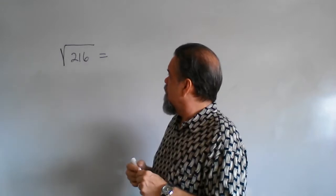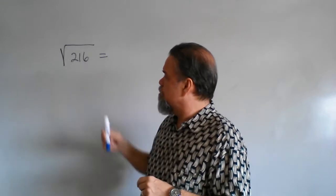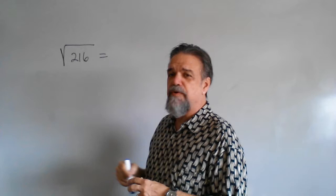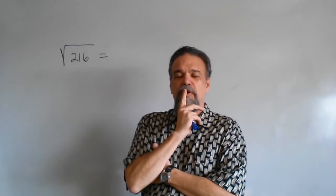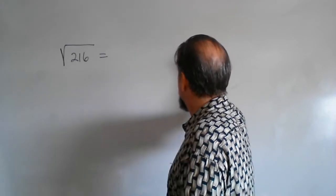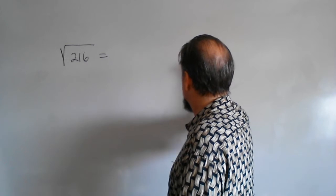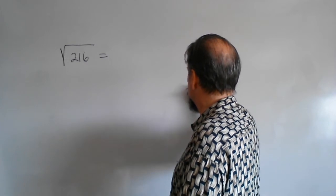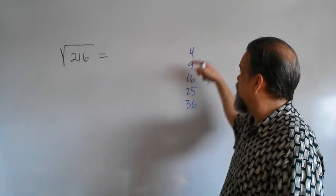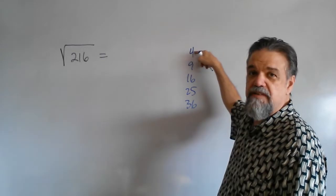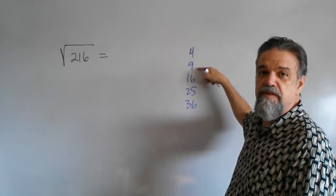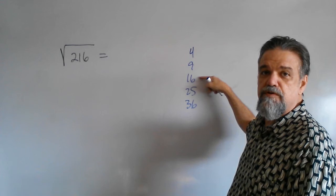One of the things you might look at is this number here and ask: is there a perfect square? And by perfect square, I mean 4, 9, 16, 25, 36 — numbers like that, that are something times itself. 2 squared is 4, 3 squared is 9, 4 squared is 16.